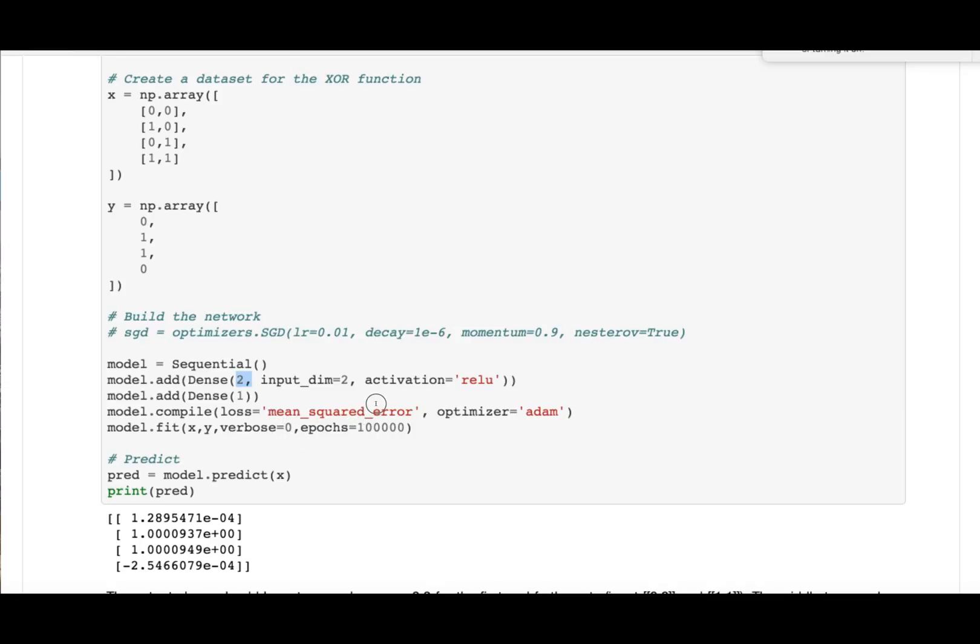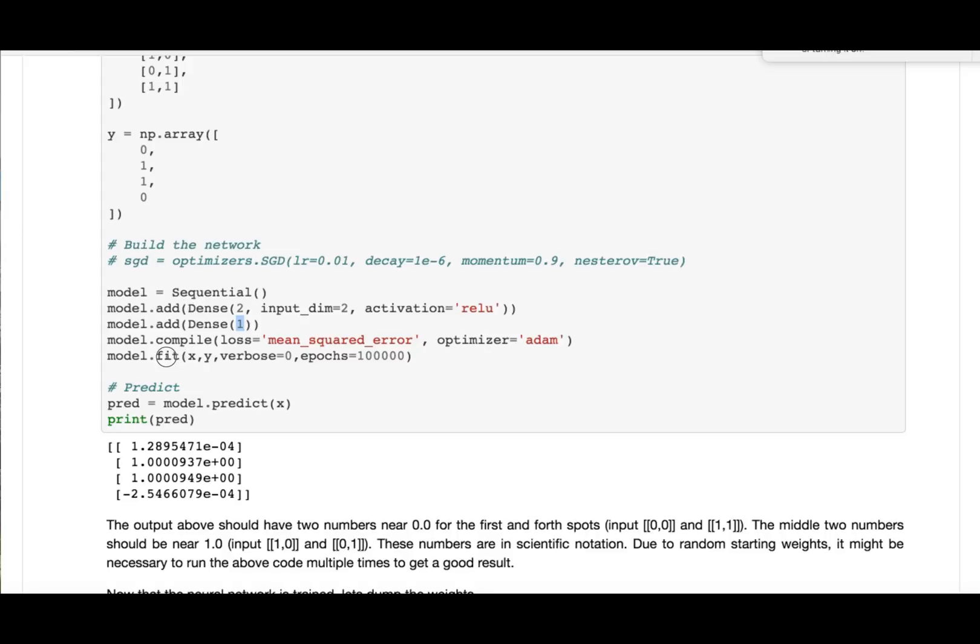So we're going to optimize it with mean square error, and the final output is going to be one neural network. It's a regression neural network. You can do XOR as classification or regression. In this case, I'm doing it as regression. I basically train it here. I am training it for 100,000 epochs. It may take longer because there's so few weights in this that your initial random values of your weights are really going to have a lot of determination on the success of your training.